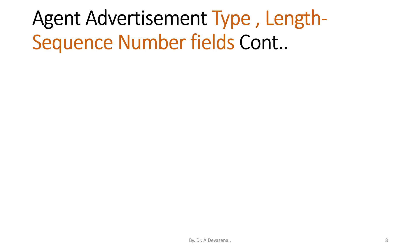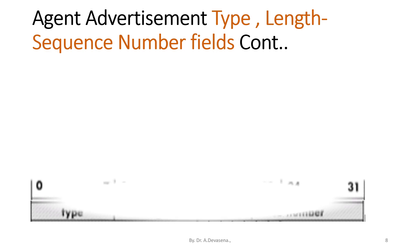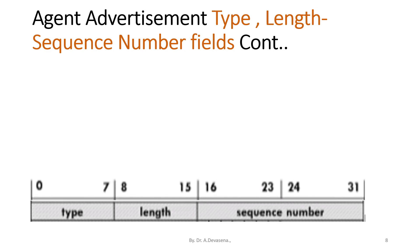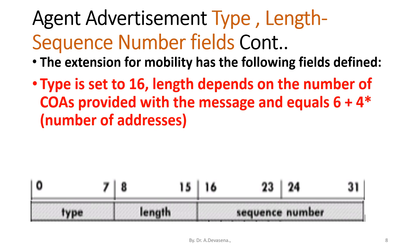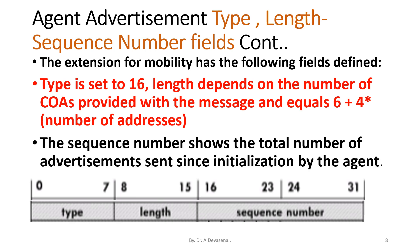Let us discuss the type, length, and sequence number fields in the agent advertisement structure. The extension for mobility has the following fields defined: type is set to 16, length depends on the number of COAs provided with the message and equals 6 plus 4 times the number of addresses. The sequence number shows the total number of advertisements sent since initialization by the agent.